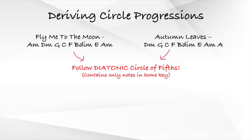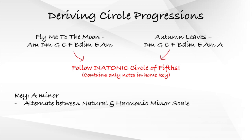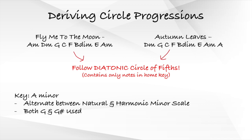The first thing we need to know is that both songs follow the diatonic circle of fifths instead of the whole circle of fifths. Simply put, the diatonic circle of fifths contains only notes in our home key. Both examples are in the key of A minor and alternate between the A natural minor scale and the A harmonic minor scale, which just means that the note G is occasionally replaced with G sharp. As such, instead of following the circle of fifths 100%, the progressions follow it most of the time, but minor changes are added to keep the chord progression inside the home key.